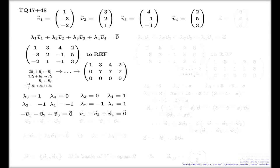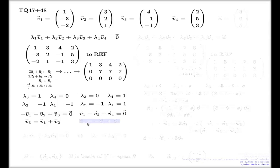Let me make one extra observation. When vectors are linearly dependent — like these four — and you have coefficients λ1, λ2, λ3, λ4, one conclusion you can draw is that you can solve for one of the vectors. For instance, you can solve for v3 and see that v3 is a sum of v1 and v2; or you can solve for v4 as a combination of v1 and v2. When vectors are linearly dependent, you can always express one vector in terms of the others — I will formalize this on the next slide.